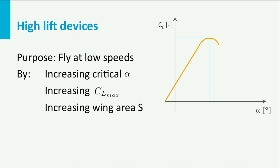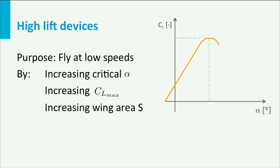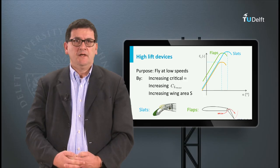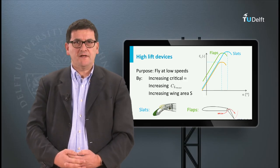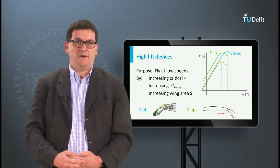This is visible in this plot. Slats increase the maximum angle of attack and as a result also the maximum lift coefficient. The flaps at the trailing edge mainly increase the camber of the airfoil and shift the curve upwards. In addition to these effects, both devices also increase the wing surface area.